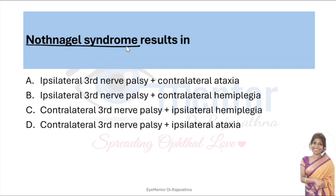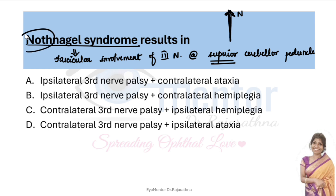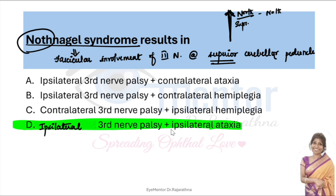Nothnagel syndrome causes ipsilateral involvement of the third nerve at the superior cerebellar peduncle. A simple way to remember: North on a map is always up — superior. Among the cerebellar peduncles we have superior, middle, and inferior — so superior cerebellar peduncle. This gives ipsilateral third nerve palsy and ipsilateral ataxia. Because of the double decussation of the cerebellar fibers, you will have ipsilateral cerebellar findings.